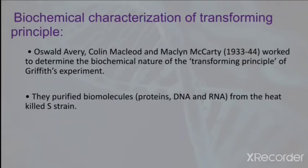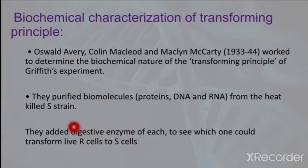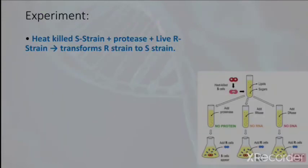They took proteins, DNA, and RNA from the heat-killed S strain bacteria of Griffith's experiment, and added digestive enzymes to each to see which one could transform R cells to S cells. First, they took heat-killed S strain bacteria and added protease — an enzyme responsible for the digestion of proteins.